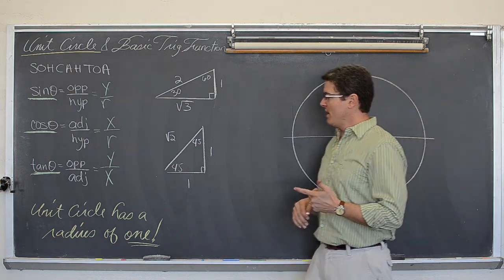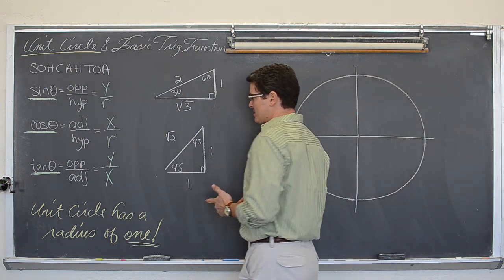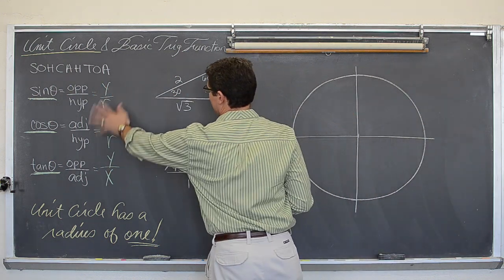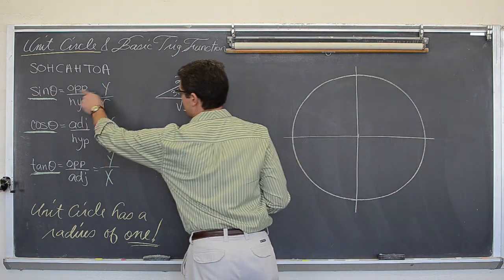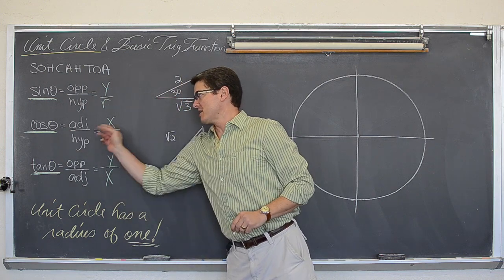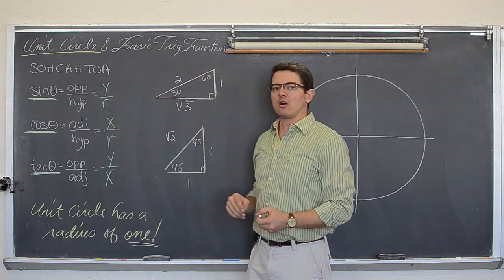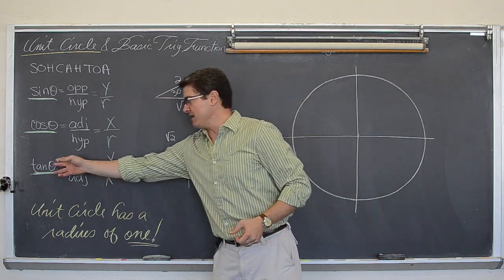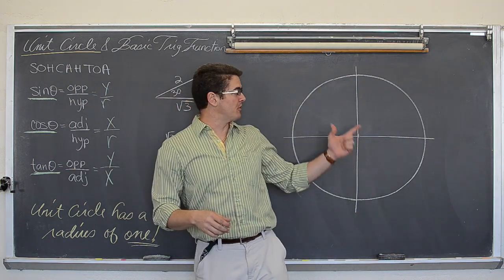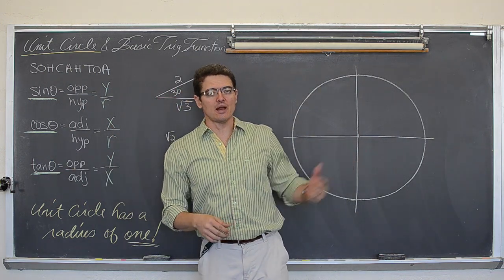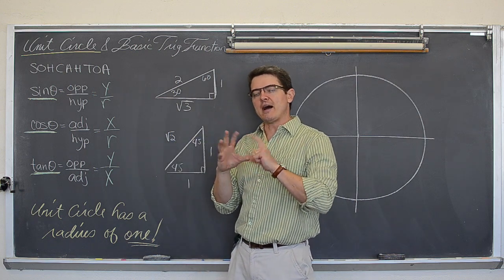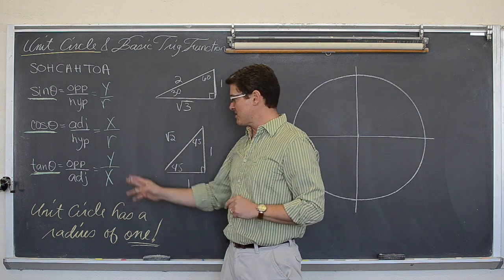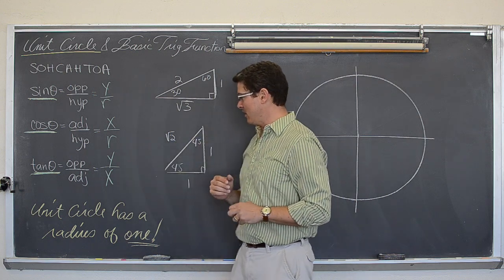Now what that means is that I have all these trig functions set up here. Sine is y over r. Cosine is x over r. And tangent, which I am not going to put on the unit circle as a value to memorize, is y over x.